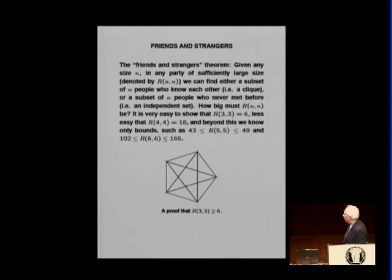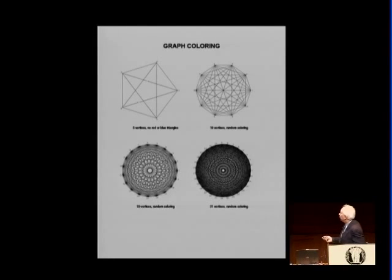Well, for four, it's 18, this number. For five, between 43 and 49. And so on. Now, you say, what was the problem with this thing? Are they big numbers? No. But they are extraordinarily difficult to compute. Now, here is a picture of what happens. When you put more and more vertices and try to get some colors.